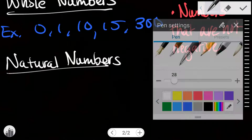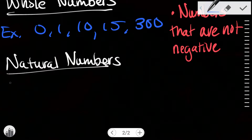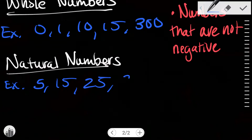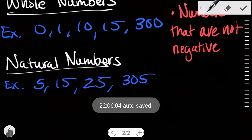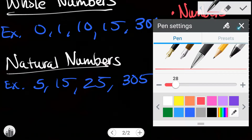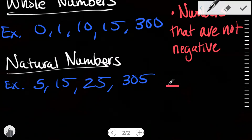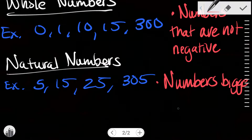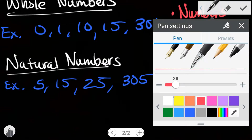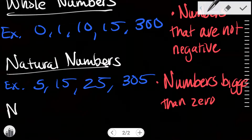Next we have natural numbers. Natural numbers are numbers that are bigger than 0, so for example 5, 15, 25, 305 — numbers bigger than 0.